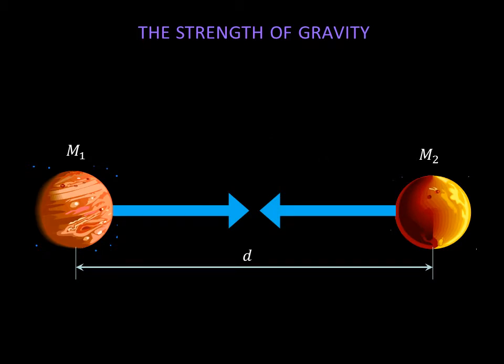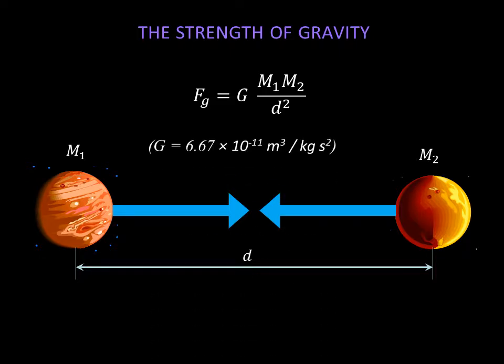Mathematically, all three statements can be combined into a single equation. It says the force of gravity, Fg, is equal to the product of the masses of two objects, M1 and M2, divided by the distance between them squared. The symbol G is a constant called the gravitational constant.